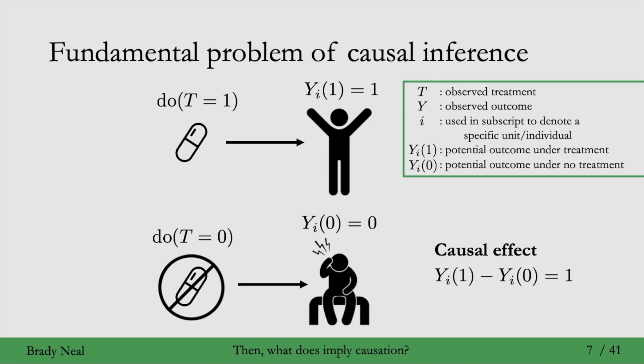Even though we know that the causal effect is 1 in this case, because we know the potential outcome under treatment is 1 and the potential outcome under no treatment is 0, we can't actually observe this causal effect.